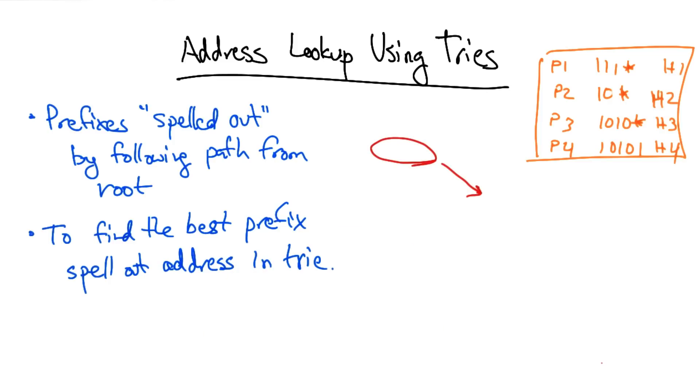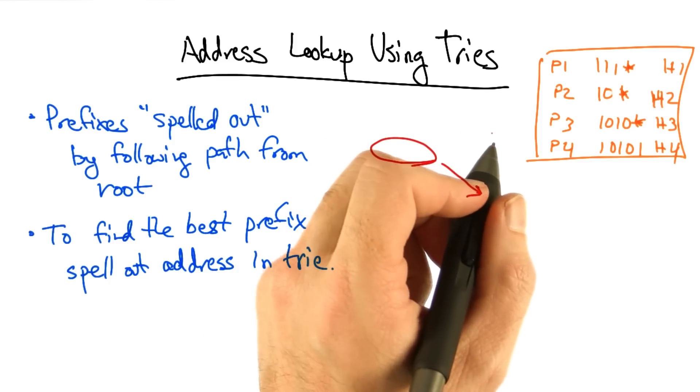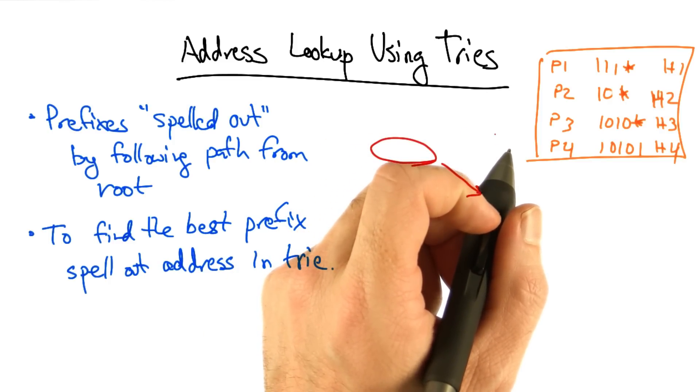In a trie, spelling out the bit one always takes us to the right, and spelling out the bit zero always takes us to the left.